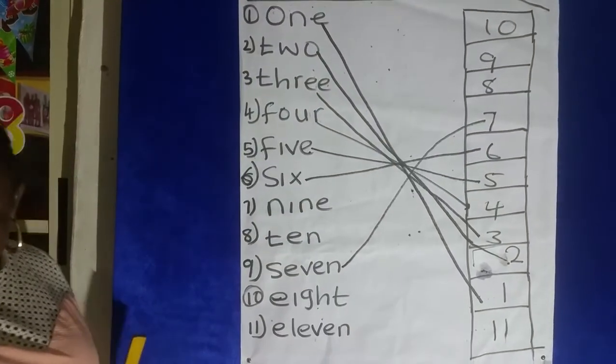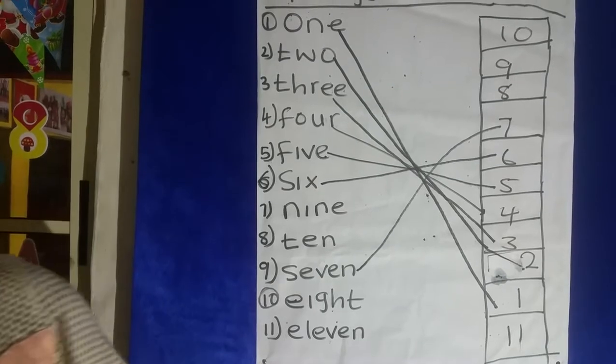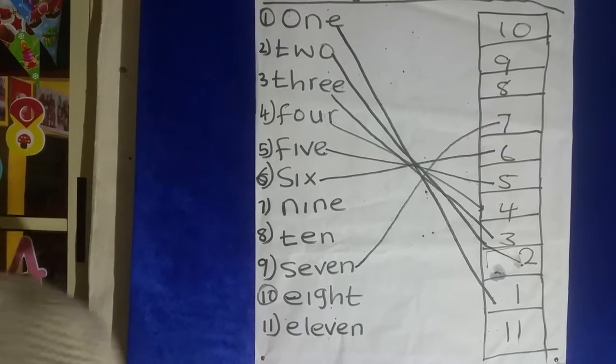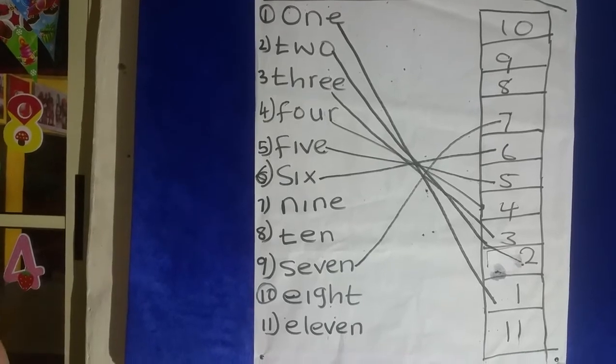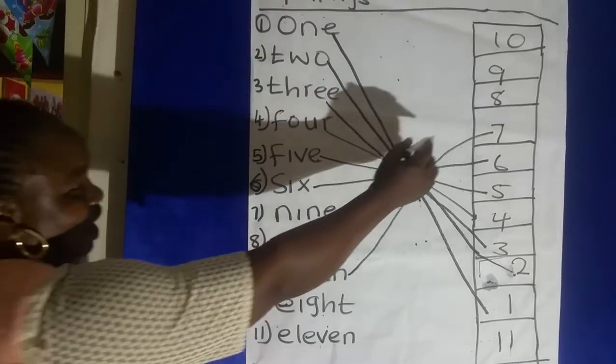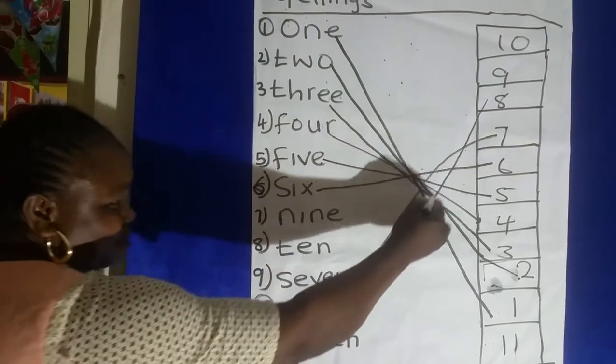You. Spell number eight. I can't hear you. Okay. E-I-G-H-T. Where is number eight? Number eight. Good.